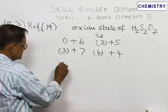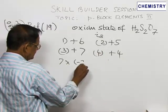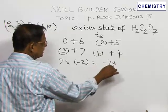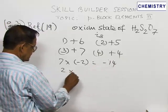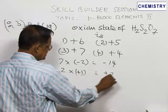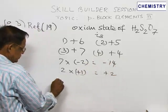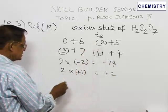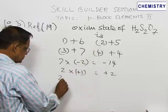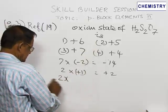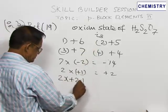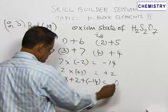So, 7 oxygen atoms will have minus 14. There are 2 hydrogen atoms with the plus 1 oxidation state. So, if you take the oxidation number of sulphur as x, 2x plus 2 plus minus 14 is equal to 0.